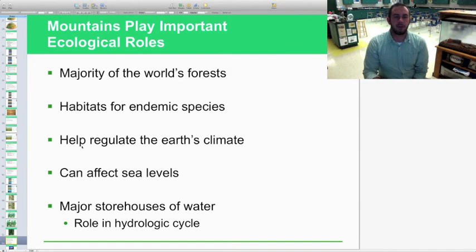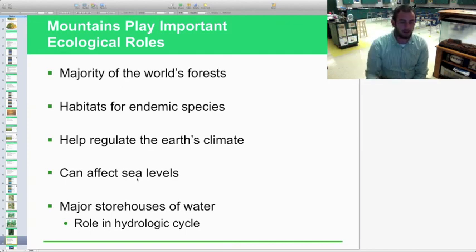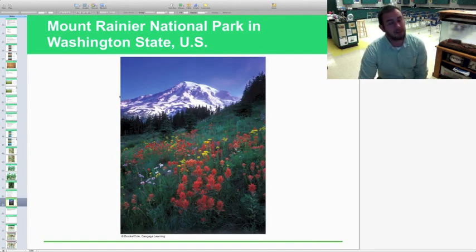The mountains play an important ecological role. We talked about the mountains and the rain shadow effect last section in section 7-1. They hold the majority of the world's forests. They are great habitats for endemic species where they're only located in the mountains. They help regulate the Earth's climate, causing different weather patterns and climate changes because of the flow of the atmosphere or the winds. They can affect sea levels as well because they can be storehouses for ice. They are major storehouses of water in those areas and they play a major role in the hydrologic cycle. And there's a beautiful image of Mount Rainier National Park in Washington State.